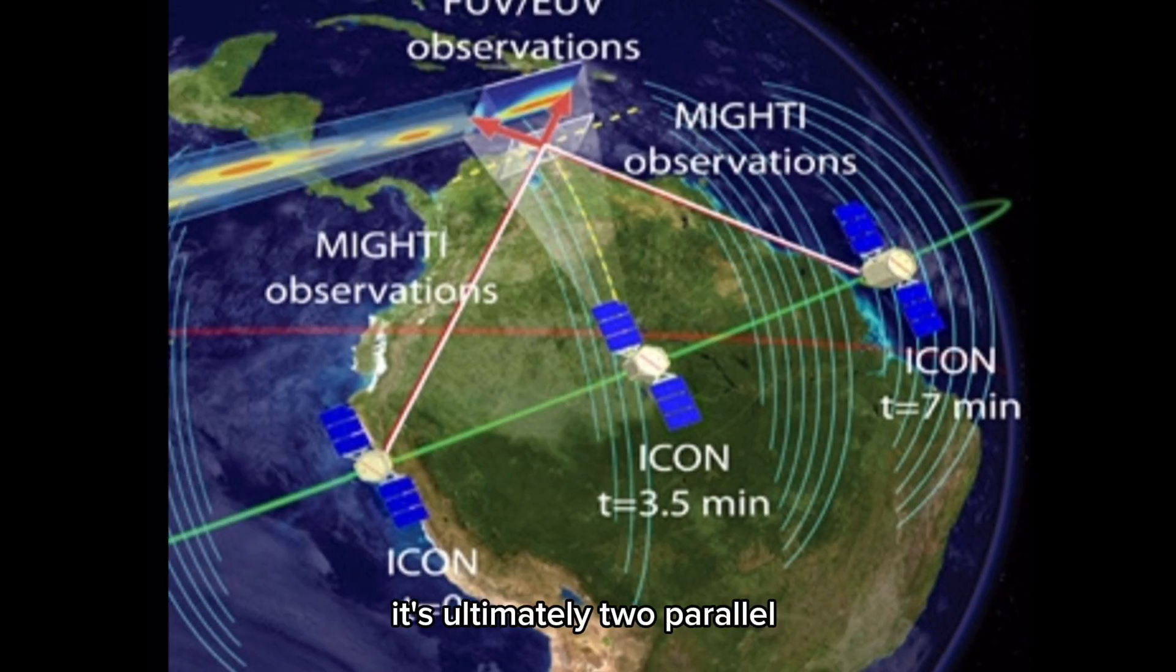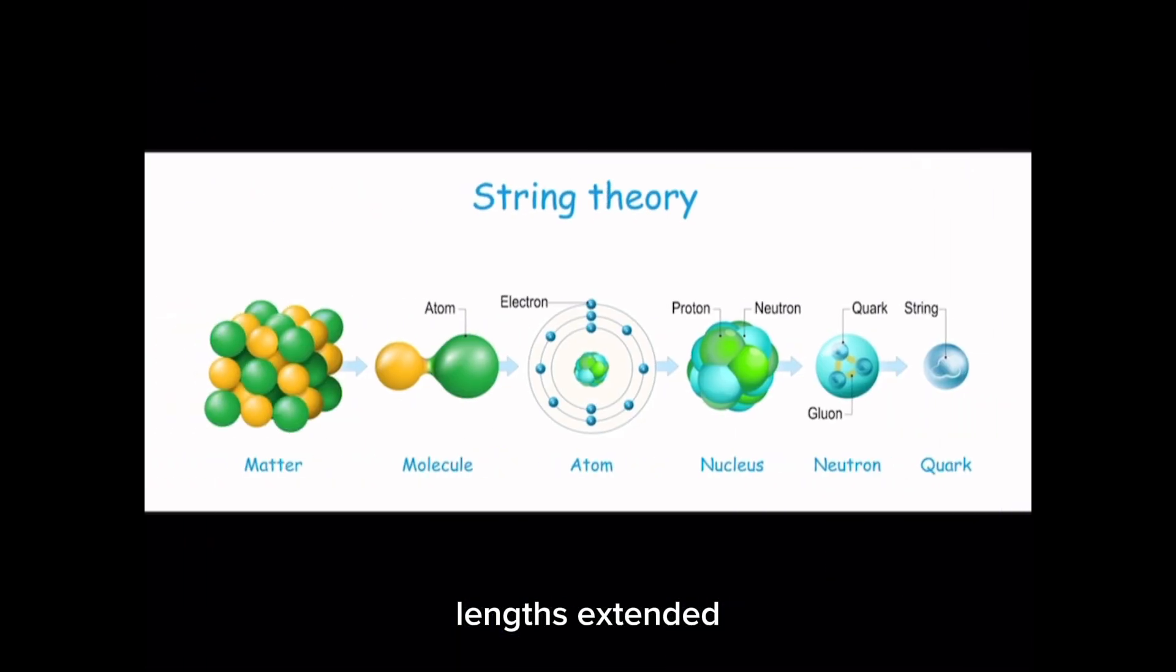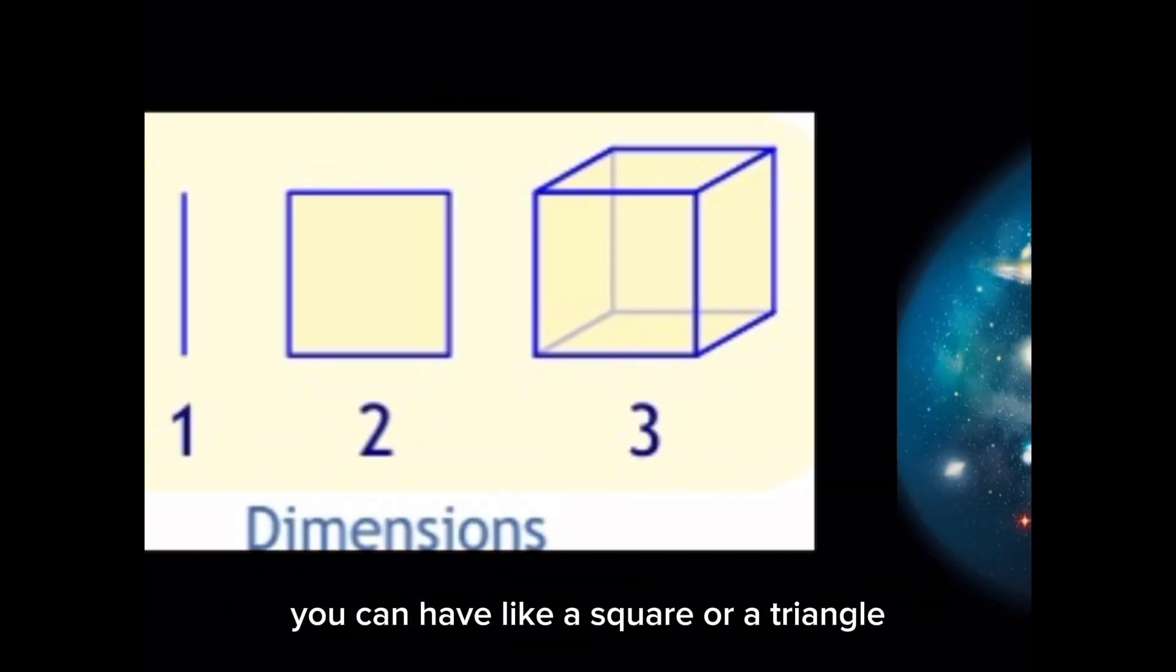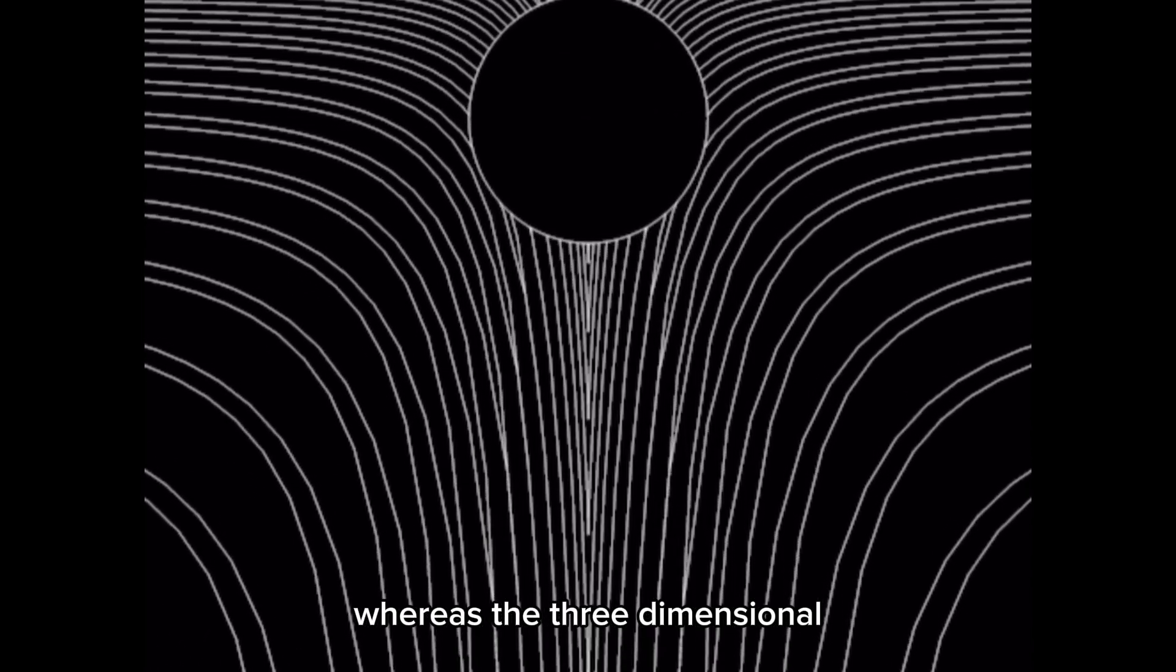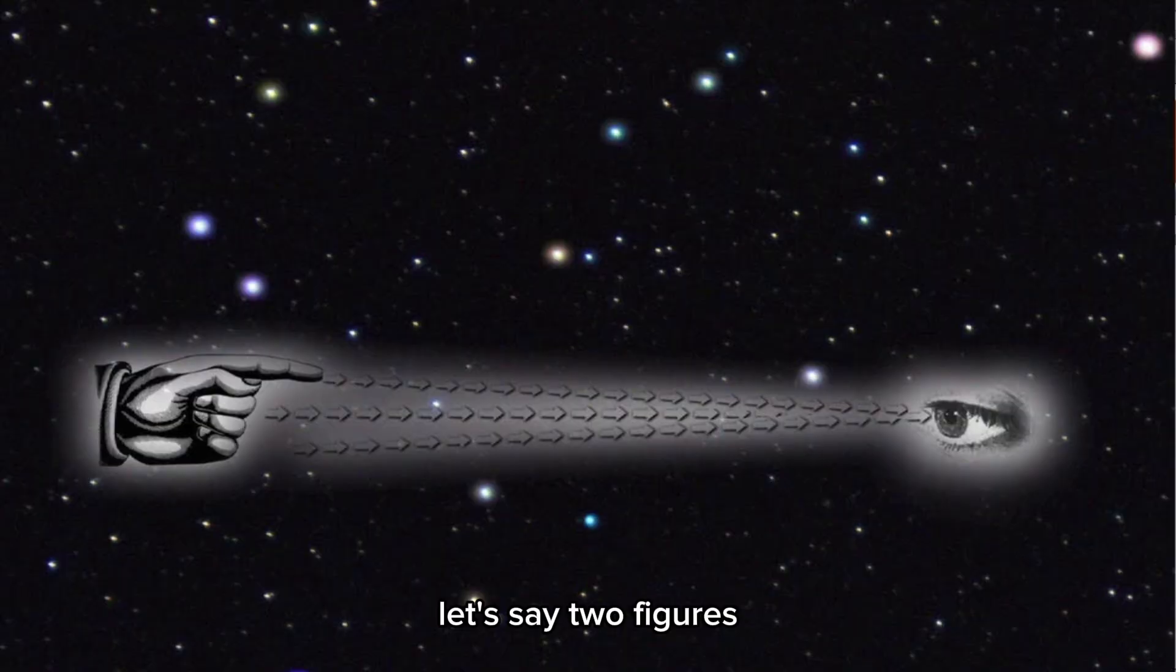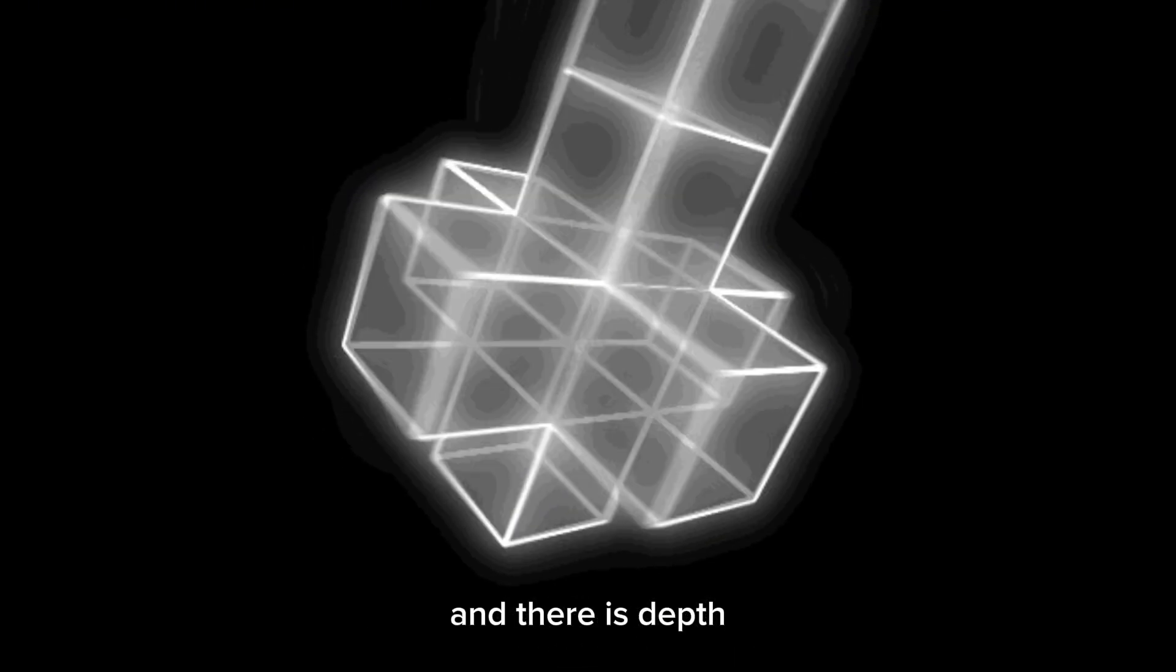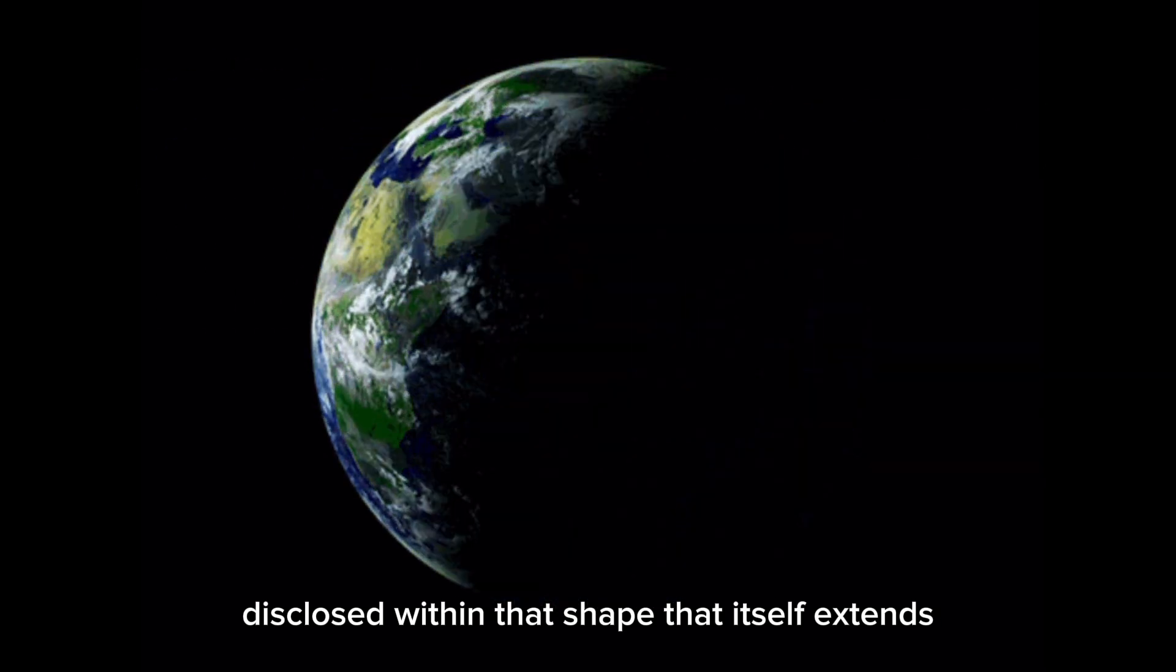It's ultimately two parallel and intersecting lengths extended. Its feature is that it is flat—you can have like a square or a triangle that is two dimensional. Whereas three-dimensional ultimately has depth, so it has let's say two figures extended out from each other and there is an area disclosed within that shape that itself extends either to the same or different shape.